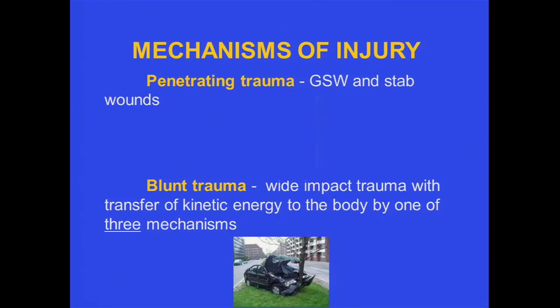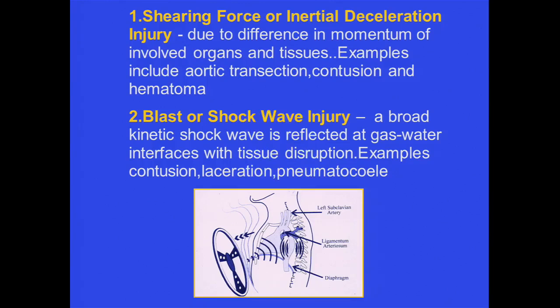Blunt trauma, for most of us, is more frequent, and this implies a wide impact trauma with transfer of kinetic energy to the body by one of several mechanisms — shearing force or inertial deceleration injuries due to differences in momentum between the involved organs and the tissues. Good examples of this kind of injury include aortic transection, contusion, and hematoma.